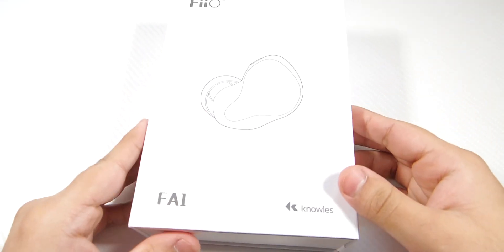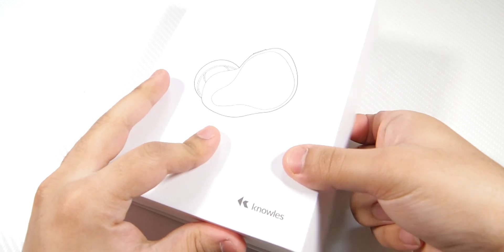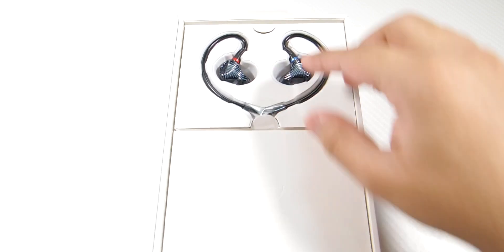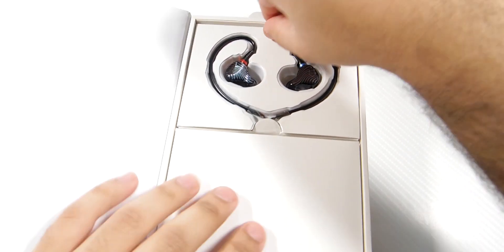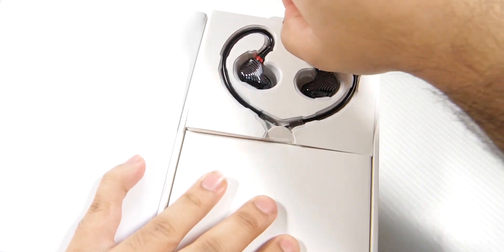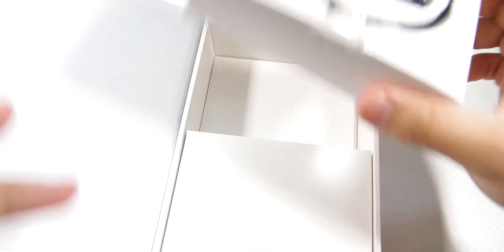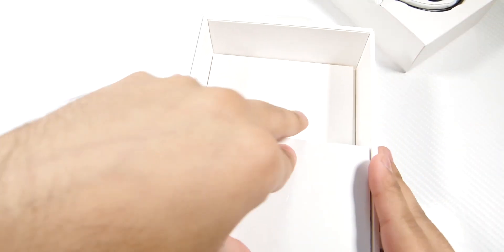Let's see how they packed it. Magnetic side, hope you can see this. There they are, the FA1s packed in just like the FH5s. I'll give you a close-up of those.